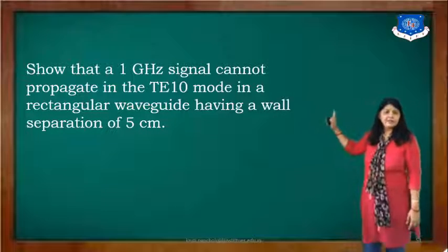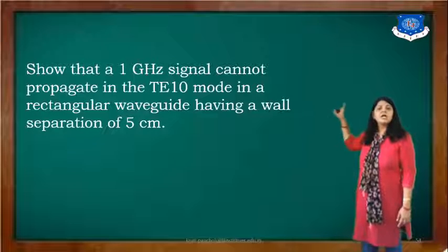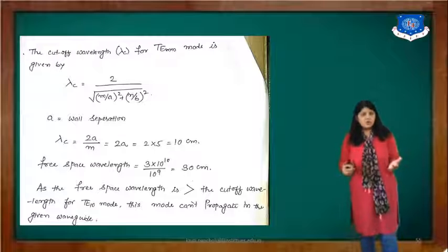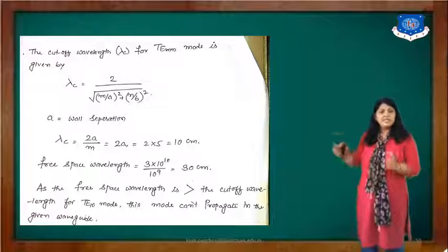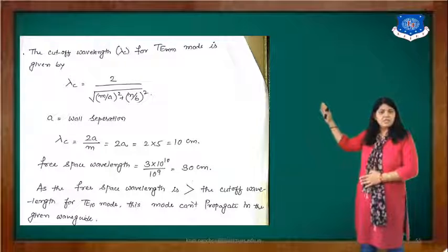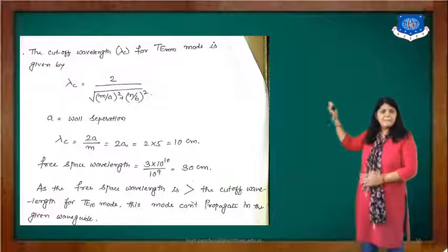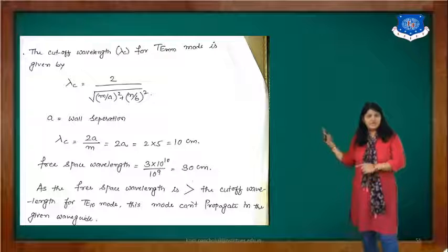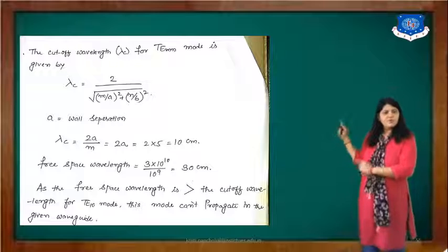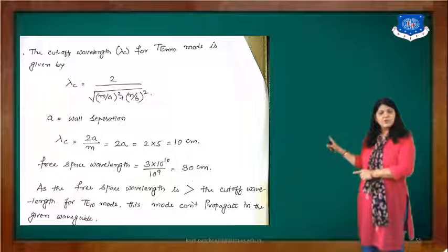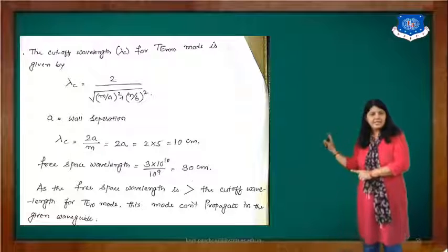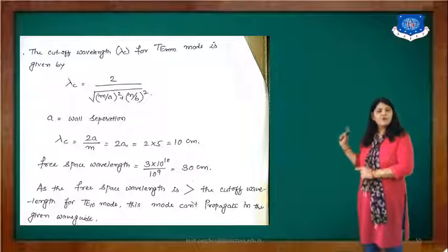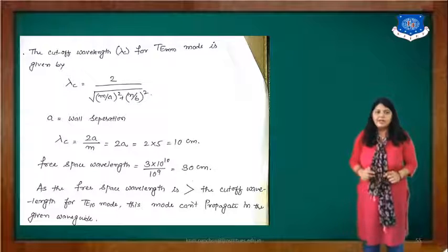Next example: show that a 1 GHz signal cannot propagate in TE10 mode in a rectangular waveguide having a wall separation of 5 cm. The cutoff wavelength for TE10 is lambda c equals 2a/m equals 2×5 equals 10 cm. The free space wavelength at 1 GHz is 3×10¹⁰/10⁹ equals 30 cm. Since the free space wavelength of 30 cm is greater than the cutoff wavelength of 10 cm for TE10 mode, this mode cannot propagate in the waveguide.